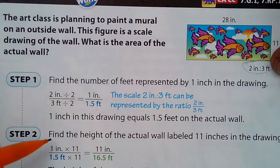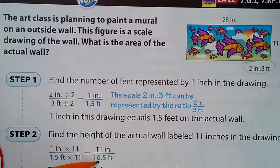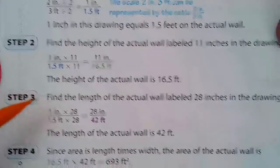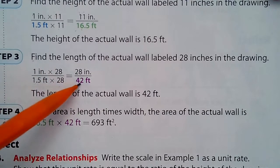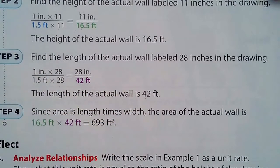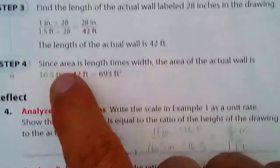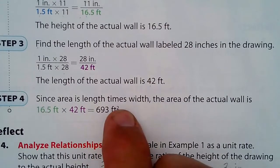Find the height of the actual wall labeled 11 inches in the drawing. So 1 inch times 11 — 11 inches equals 1½ feet times 11, which is 16.5 feet. So that part is 16½ feet in real life. The length labeled 28 inches: 1½ times 28 is 42 feet. Now with those two dimensions — 16.5 and 42 — we multiply them to get the area: 693 square feet.